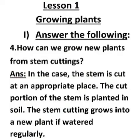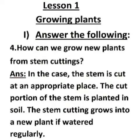4th question: How can we grow new plants from stem cuttings? Answer: The stem is cut at an appropriate place. The cut portion of the stem is planted in soil. The stem cutting grows into a new plant if watered regularly.